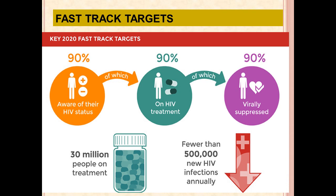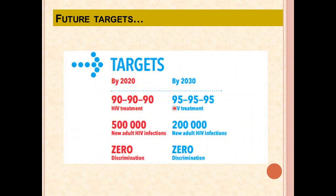The fast-track 2020 target: of 100% of individuals infected with HIV, 90% should know their status, of whom 90% should be on treatment, of whom 90% should have viral load suppression (the 90-90-90 target). The 2030 target is 95-95-95: 95% aware, 95% on treatment, 95% with viral load suppression — with a decline in new infections from 5 lakhs to 2 lakhs and zero discrimination.